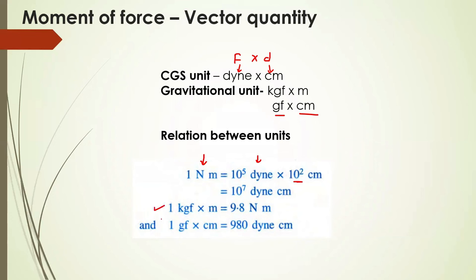There is also a conversion for gravitational units. In the gravitational system, the unit is kilogram-force metre. As we know, 1 kilogram-force equals 9.8 Newtons, so 1 kilogram-force metre equals 9.8 Newton metres. Similarly, 1 gram-force centimetre equals 9.8 Newton centimetres. These are the types of units of moment of force.